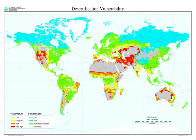The world's most noted deserts have been formed by natural processes interacting over long intervals of time. During most of these times, deserts have grown and shrunk independent of human activities. Paleodeserts are large sand seas now inactive because they are stabilised by vegetation, some extending beyond the present margins of core deserts, such as the Sahara, the largest hot desert.